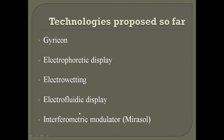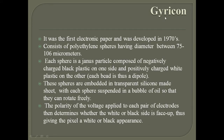Gyricon was the first electronic paper, developed in the 1970s. It consists of polyethylene spheres having a diameter between 75 to 106 micrometers. Each sphere is a Janus particle composed of negatively charged black plastic on one side and positively charged white plastic on the other side. Each bead is thus a dipole with negative and positive charges on both sides.